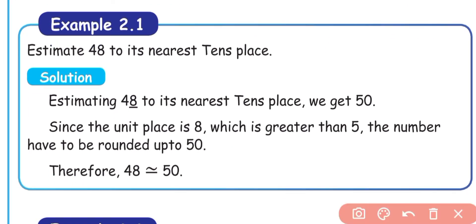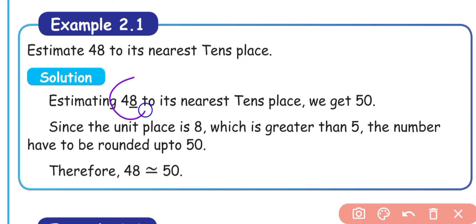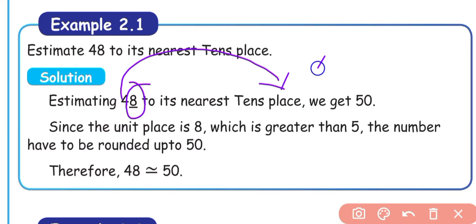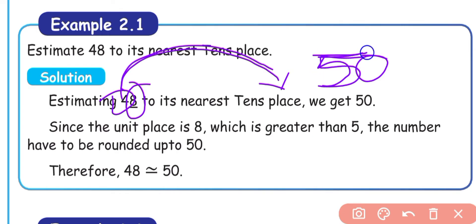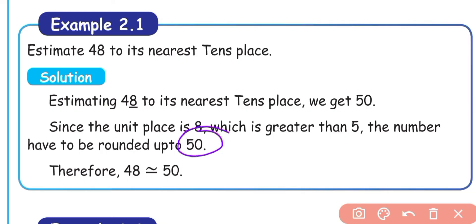Example 2.1: Estimate 48 to its nearest tens place. The ones place digit is 8. Since 8 is greater than 5, round up: 4 tens becomes 5 tens, that is 50. So 48 estimated to the nearest tens place is 50.